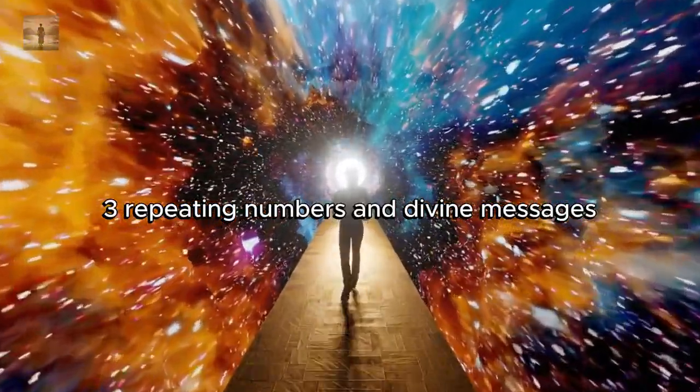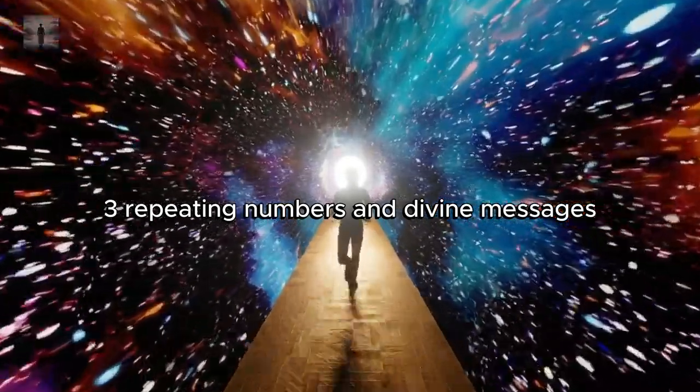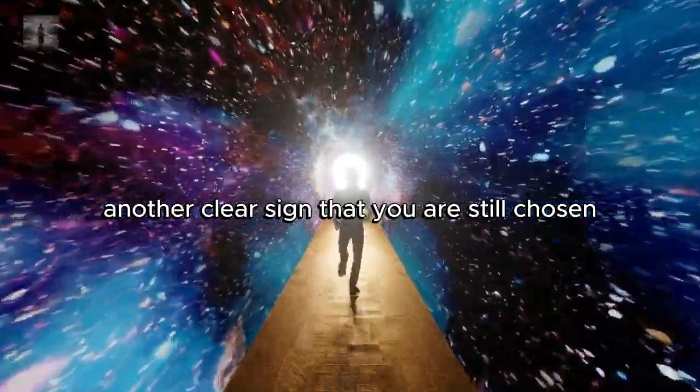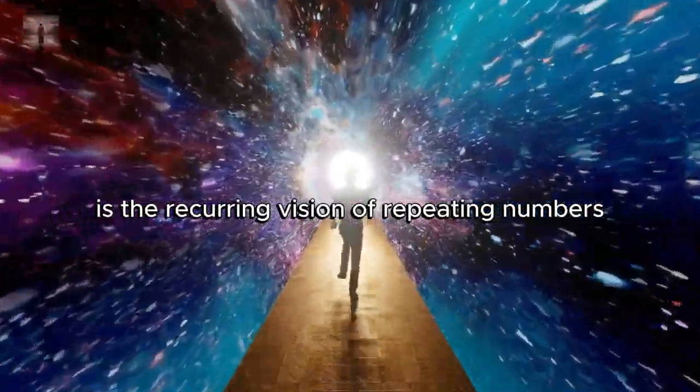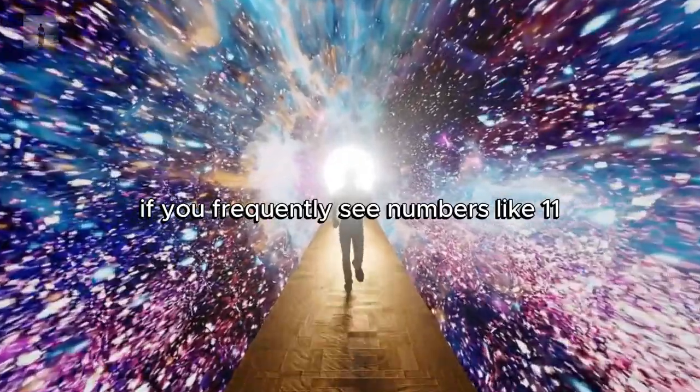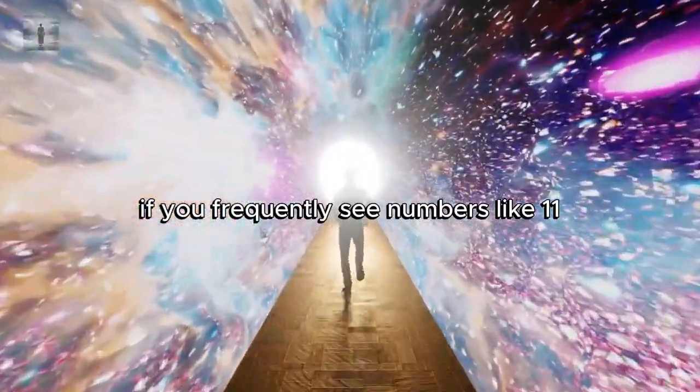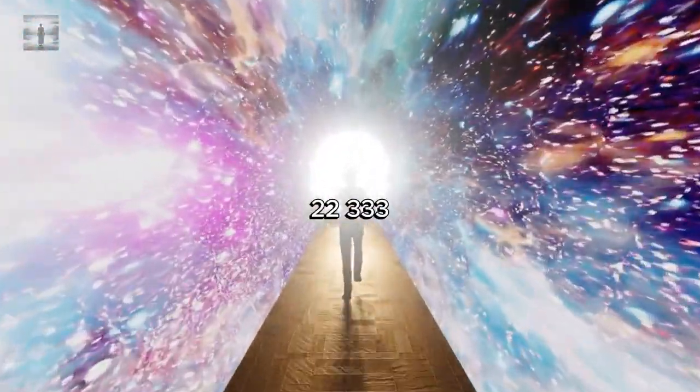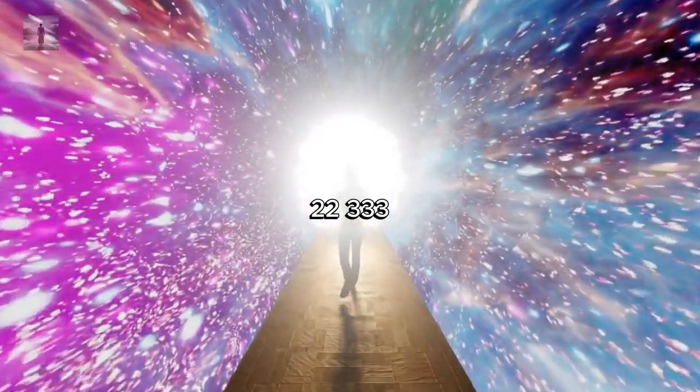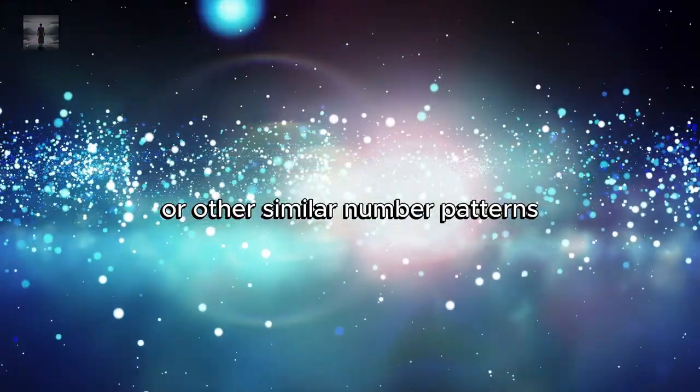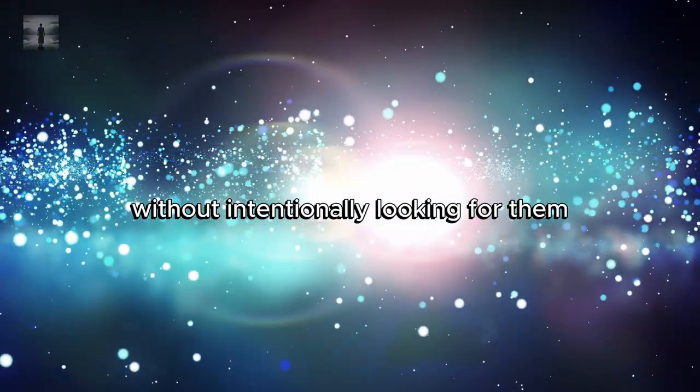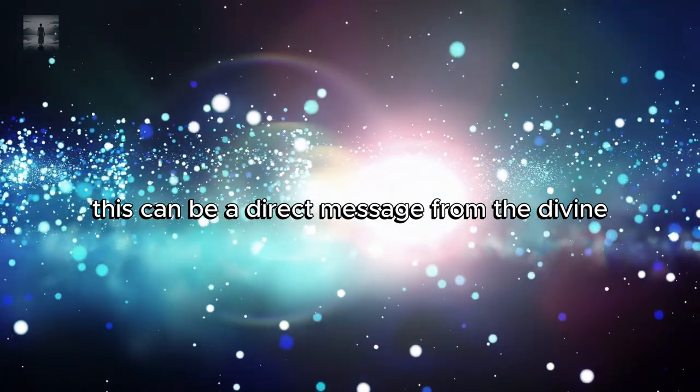Number three: Repeating Numbers and Divine Messages. Another clear sign that you are still chosen is the recurring vision of repeating numbers. If you frequently see numbers like 1111, 2222, 333, or other similar number patterns without intentionally looking for them, this can be a direct message from the divine.